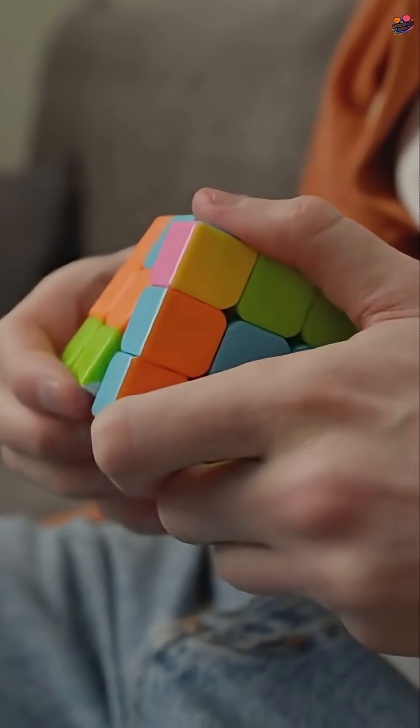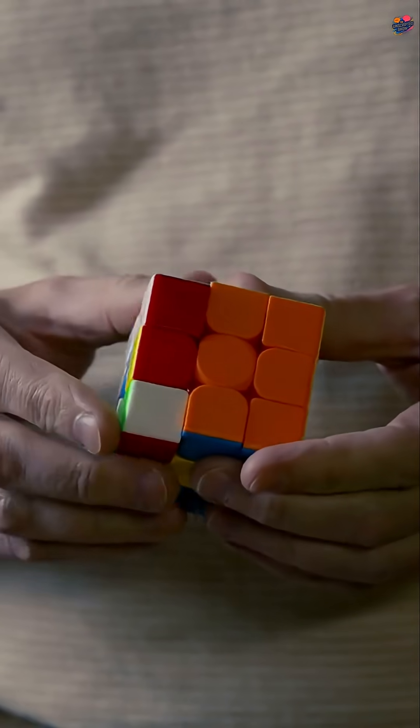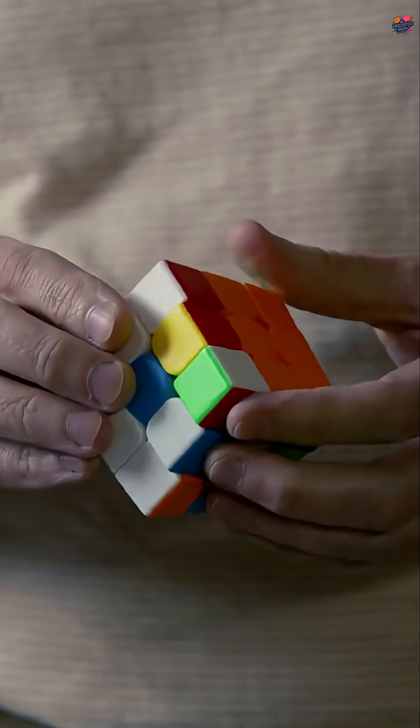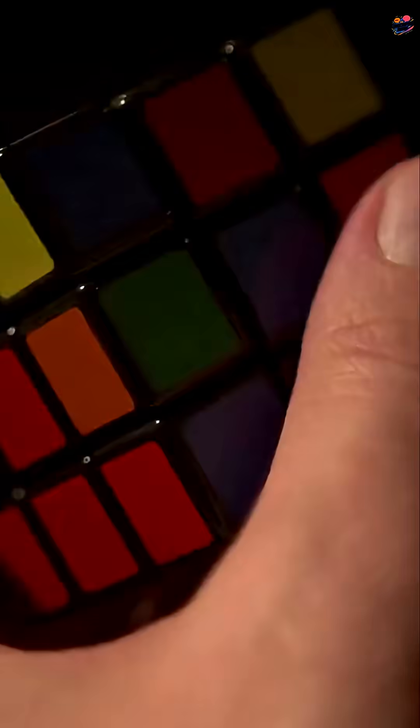But here's the twist. After scrambling the colors, Rubik couldn't solve it. It took him over a month of frustration. Finally, he figured it out. It dawned on him that he had created a brilliant puzzle.